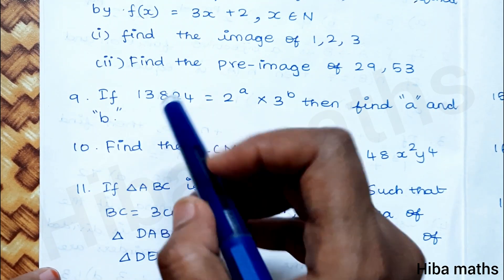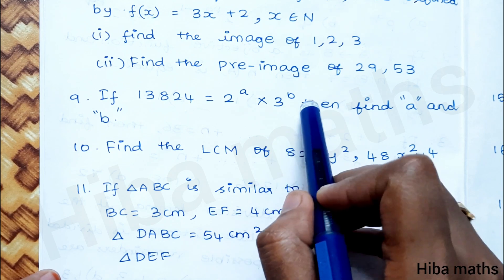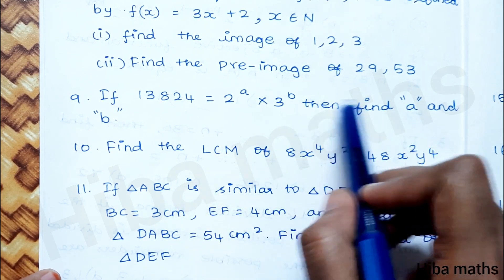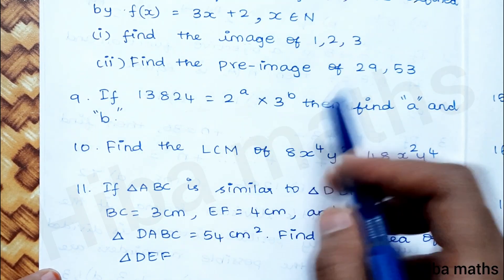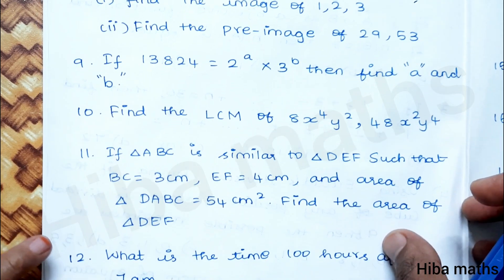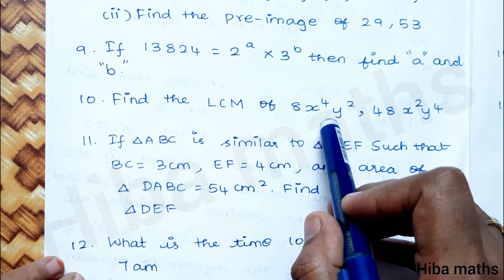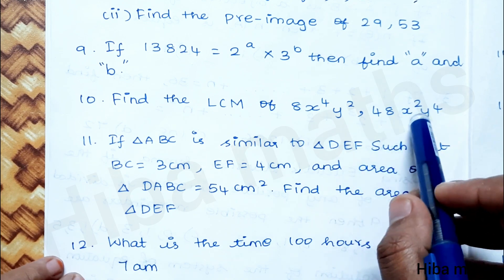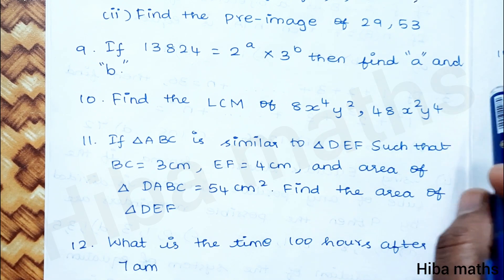Ninth question: given 1, 3, a, 2, 4 equals 2 power a times 3 power b — find a and b by doing prime factorization. Next question is LCM: find the LCM of 8x to the power 4 y squared and 48x squared y to the power 4.